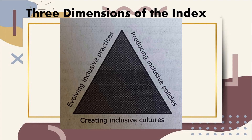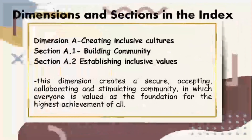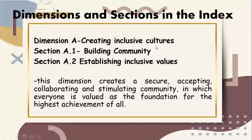The backbone of the framework is the laying down and establishing of an inclusive culture. Without this foundation, it will be quite difficult to get people to shift policies and practices. A non-supportive culture would most likely result in resistance from the school's direct stakeholders. These three dimensions also branch out into sections to further guide schools into implementing more direct steps toward this paradigm shift. Let's discuss first dimension A, which is creating inclusive cultures.